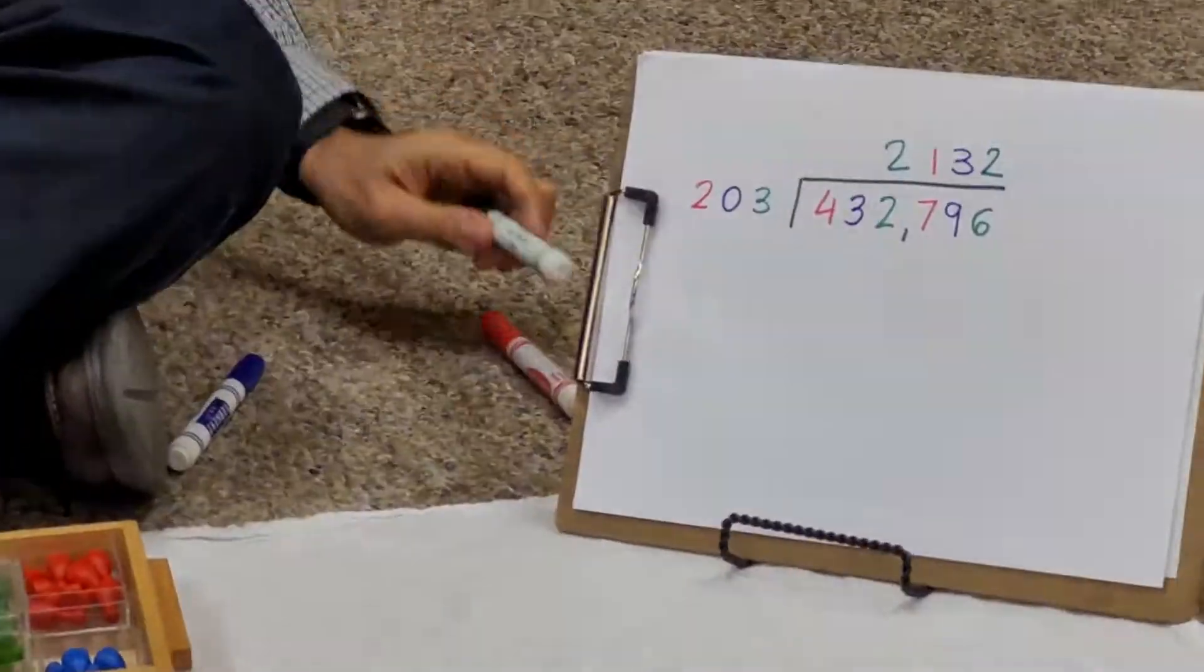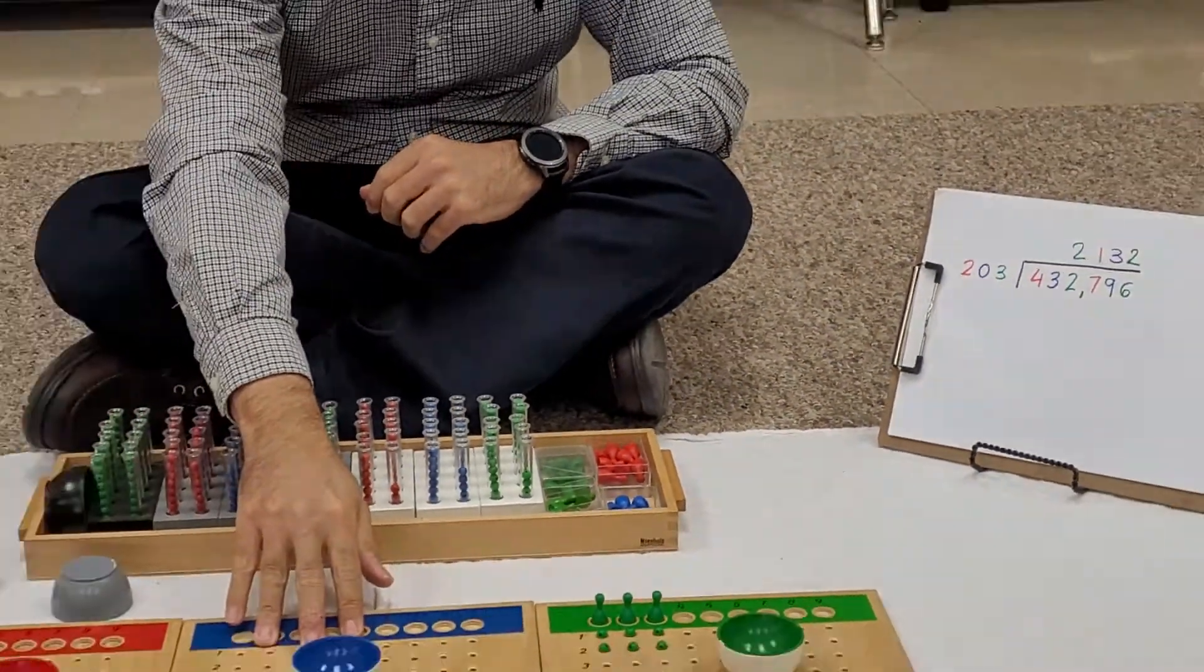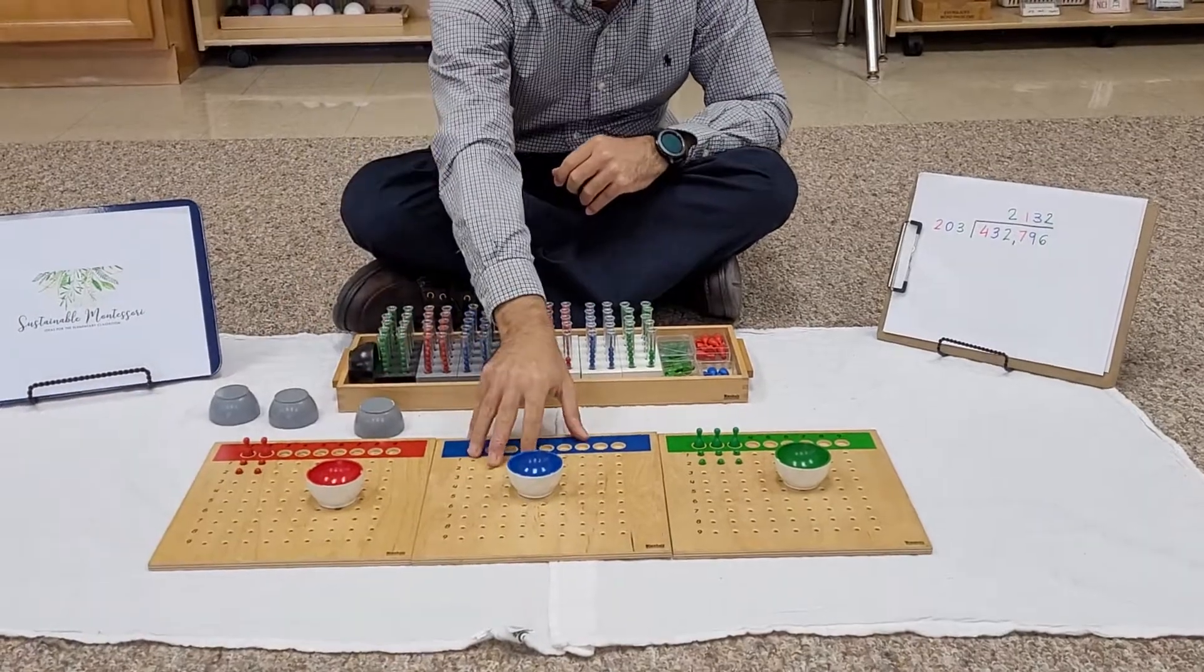As we said at the beginning, this is a special case in which we don't have a number on the tens, so what we have to do is kind of jump over this board but always have it.